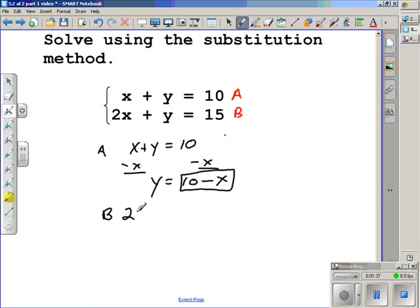So what I suggest is that you write down equation B, 2x + y = 15. And we're going to take out the y and substitute in that 10 - x. So we'll rewrite equation B, but instead of having y, we'll put in the 10 - x. So the new equation B is 2x + (10 - x) = 15.